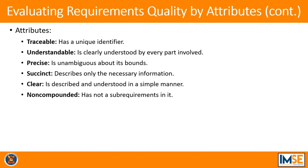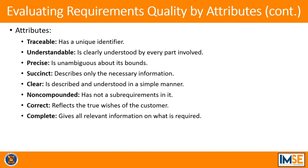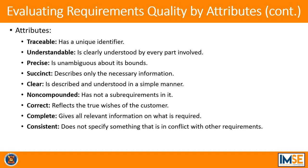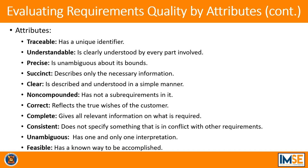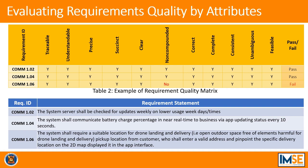A quality requirement must also be complete, providing all relevant information; consistent with other requirements, not conflicting with them; unambiguous, having one and only one interpretation; and feasible, meaning there must be a known way to accomplish it. Each requirement is analyzed and approved only if it meets all defined quality attributes, forming the requirement quality matrix. In the example presented, requirement COMP 106 presents two ideas — a suitable pick-up location and how the customer enters that information into the app — so it fails the non-compounded criterion.